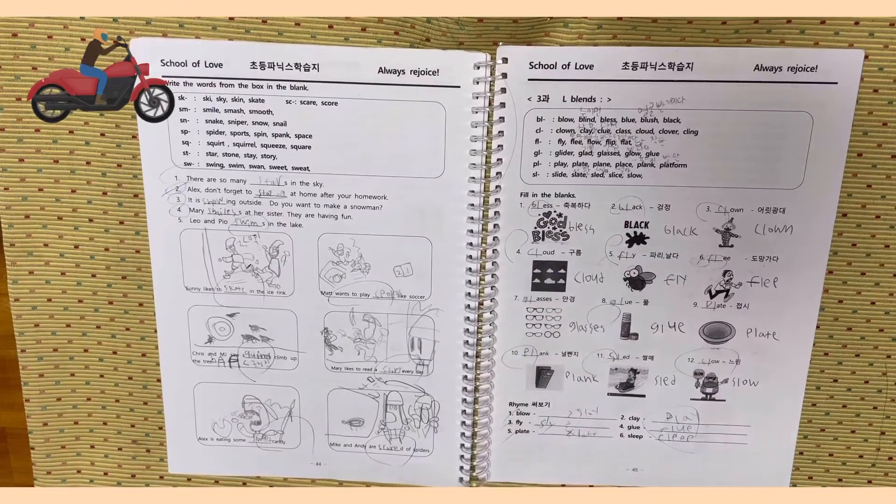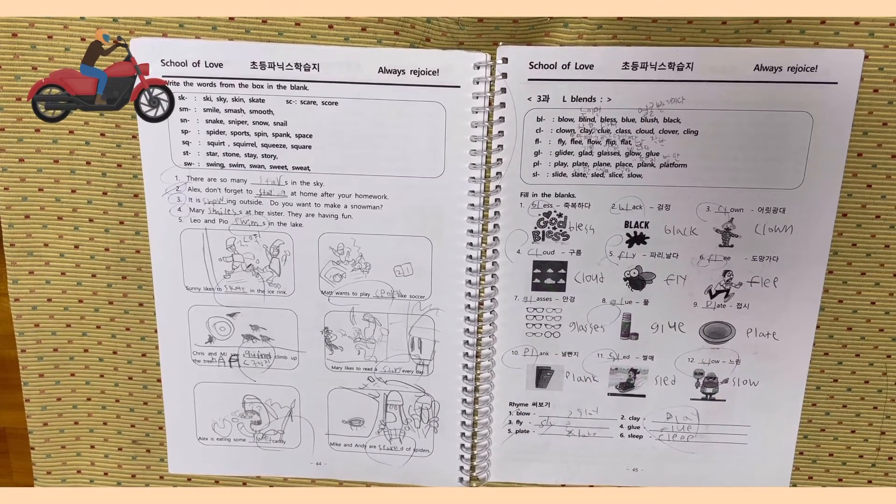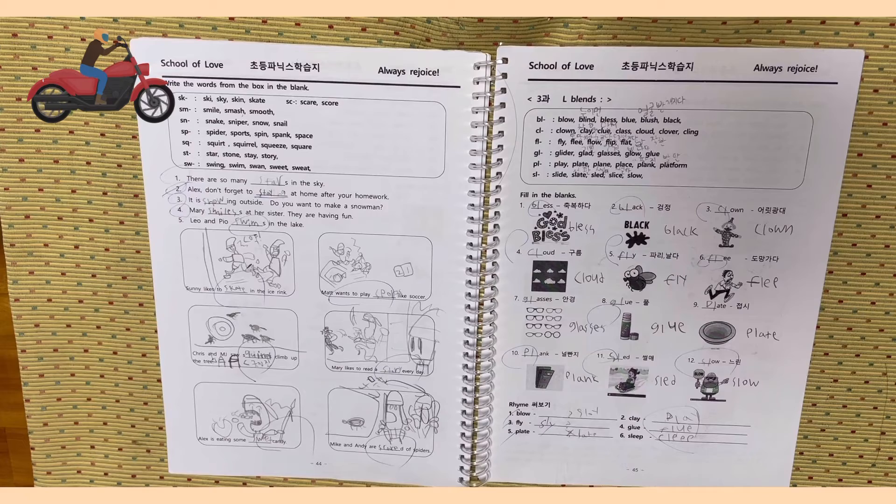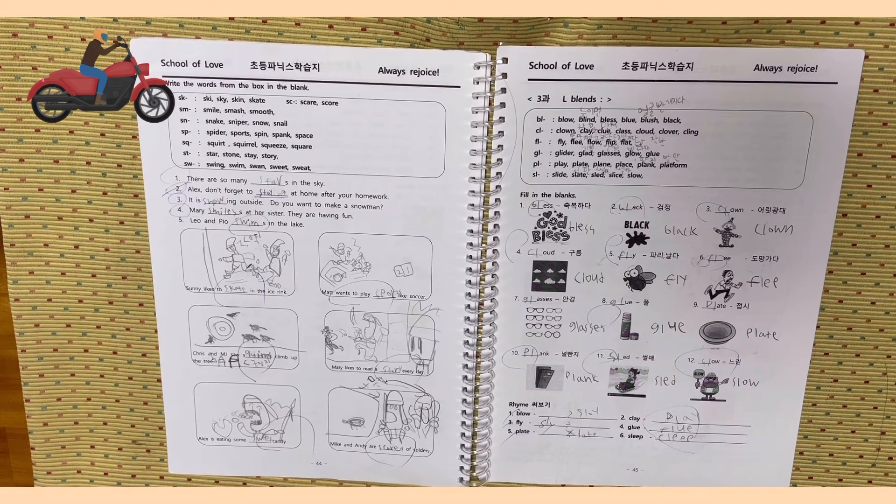Page 44. Write the words from the box in the blank. No. 1, There are so many stars in the sky. Alex, don't forget to stay at home after your homework.